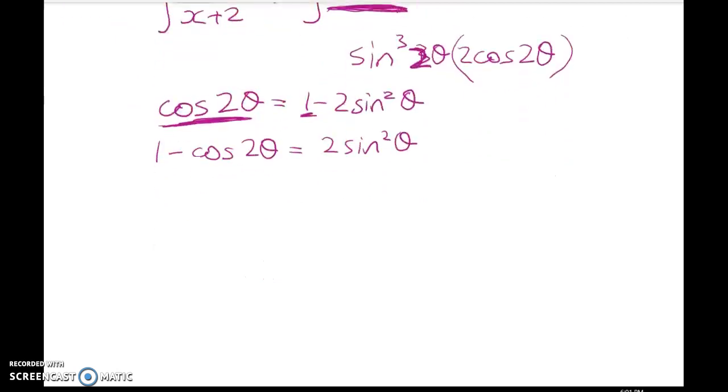We've done this lots of times, right? So then 1 minus cos 2 theta over 2 is equal to sin squared of 2 theta.